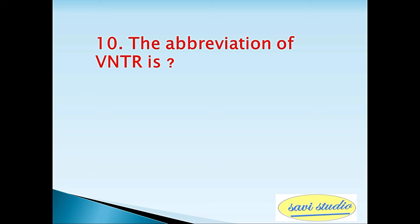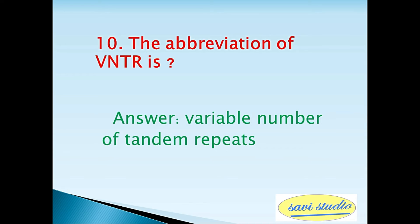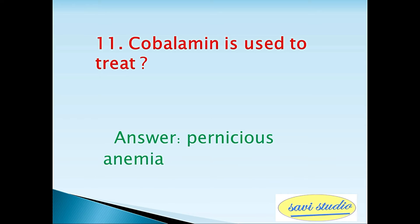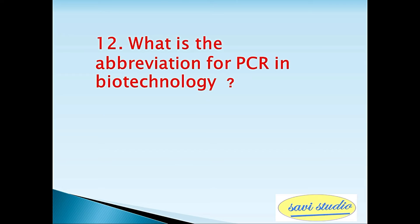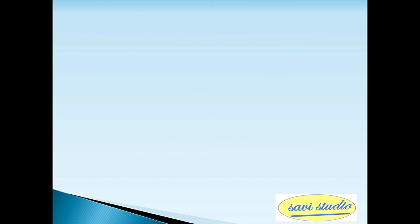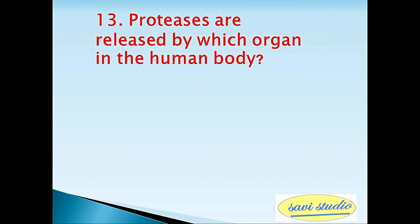Tenth question: The abbreviation of VNTR is — answer: Variable Number of Tandem Repeats. Eleventh question: Cobalamin is used to treat — answer: pernicious anemia. Twelfth question: What is the abbreviation for PCR in biotechnology? Answer: Polymerase Chain Reaction. Thirteenth question: Proteases are released by which organ in the human body? Answer: pancreas.